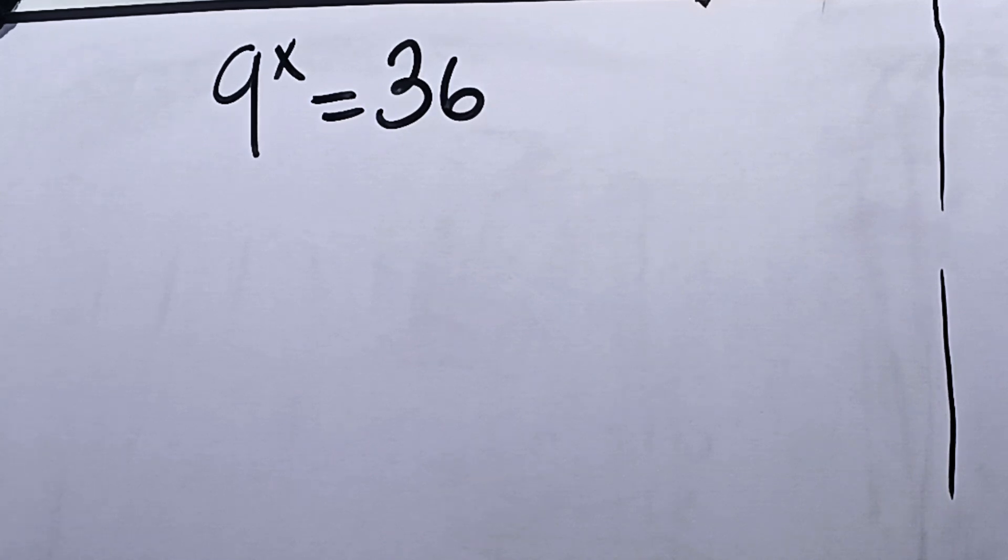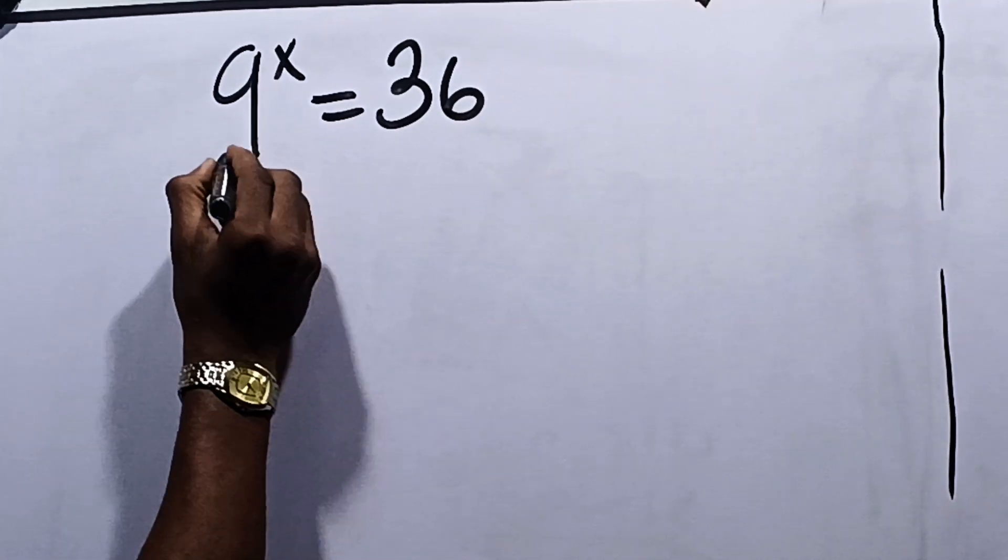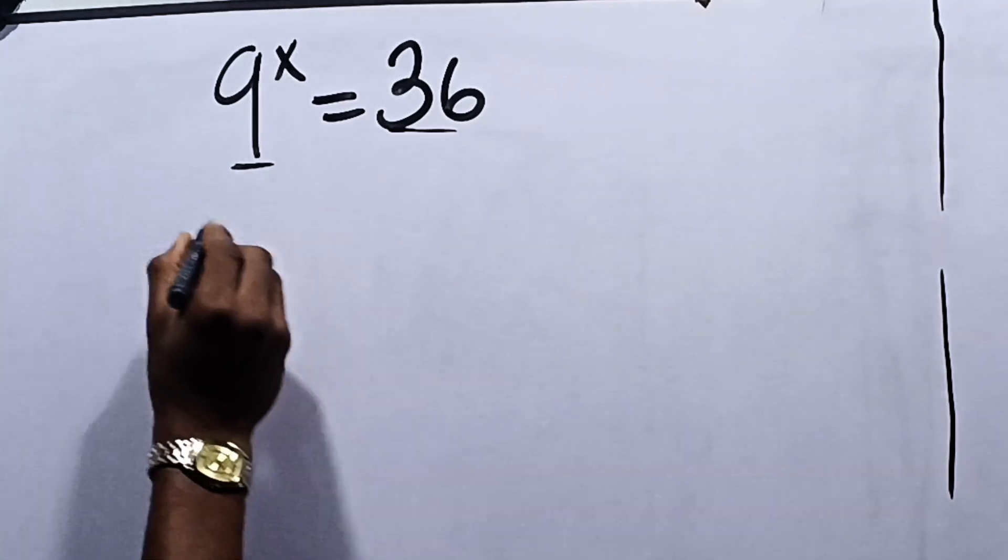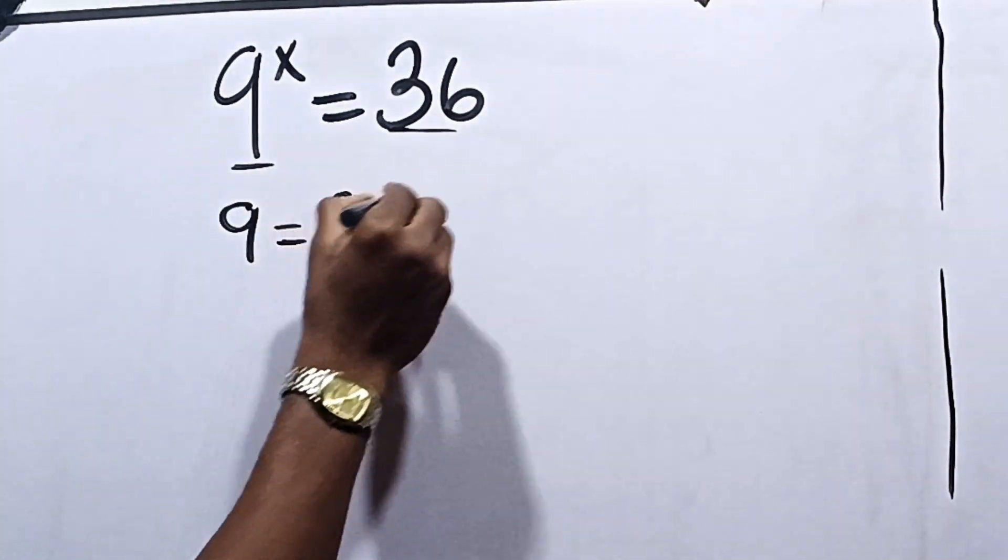Now in order to solve this, first thing we should do is express 9 and 36 in their multiples. So we have that 9 is equal to 3 times 3, which is equal to 3 squared.